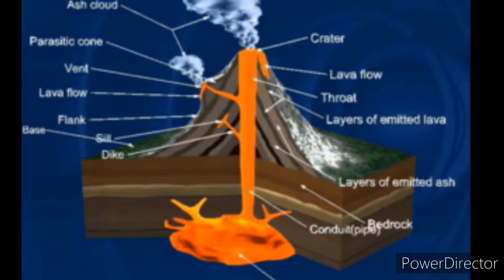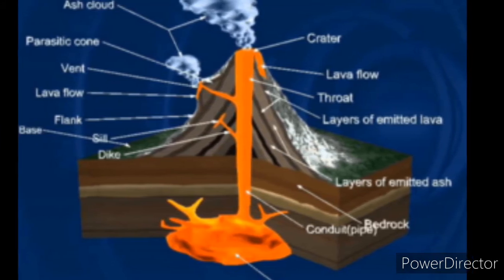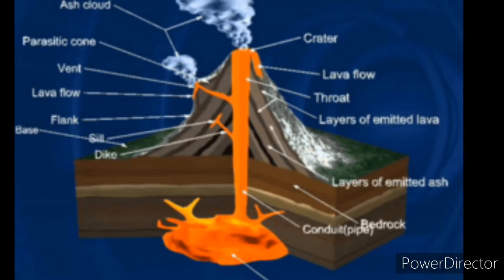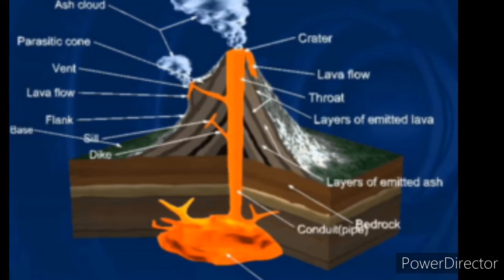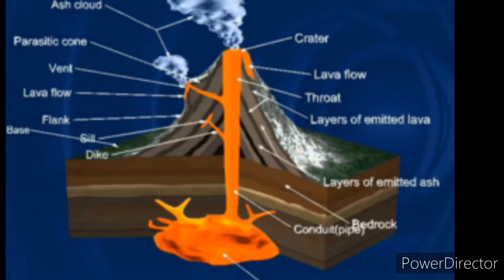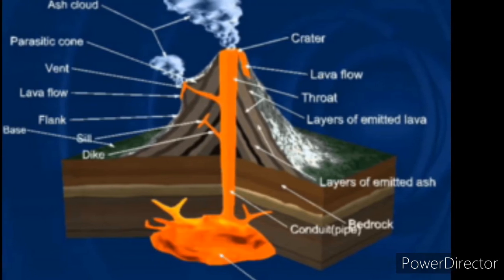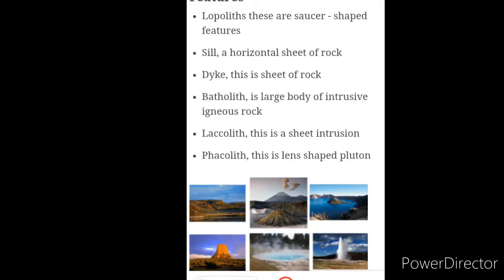We also have intrusive igneous features. You have the laccolith, which is a saucer-shaped feature. A sill is a horizontal sheet of rocks. A batholith is a large body of intrusive igneous rocks. A laccolith is a lens-shaped intrusion. A dyke is a wall-shaped feature.